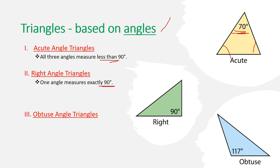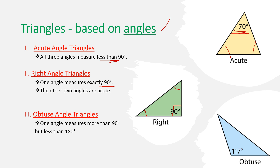A right angle stands for 90 degrees. If one of the angles is 90 degrees, the remaining angles must be acute — less than 90 degrees. This is because the sum of all angles must be 180. So 90 plus a plus b equals 180, meaning a plus b equals 90, and therefore both a and b must be less than 90.